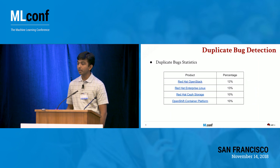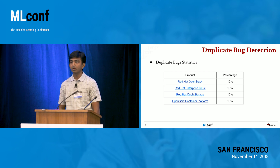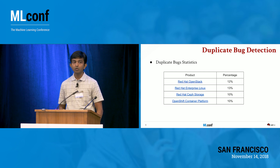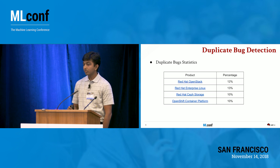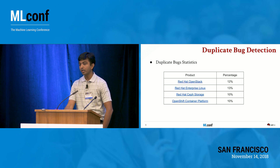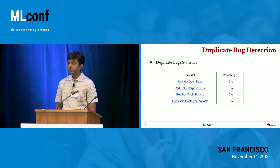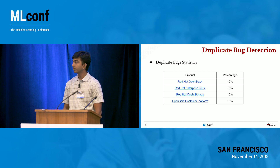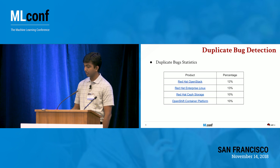The first model I'll detail is duplicate bug detection. Anytime there's a newly reported problem, you might want to find out whether it already exists in your defect tracking system automatically. We find significant numbers of duplicate bug reports in Red Hat products, and the numbers are even higher for projects like Mozilla and Eclipse, ranging from 20 to 30%.